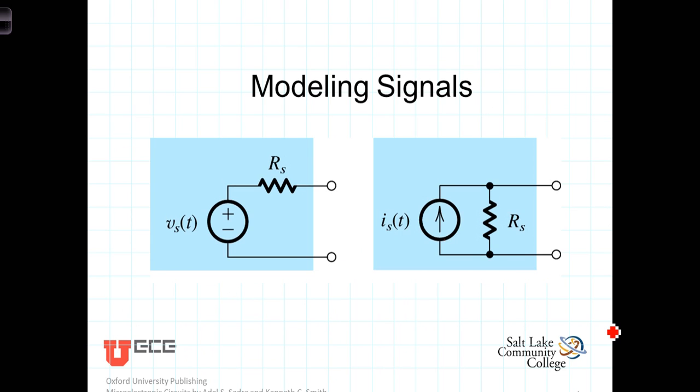These time variations of a signal are generally related to some physical property. Embedded in the signal's amplitude, phase, or frequency spectrum is information about the physical property that is of valuable interest. We can model these signals as either Thevenin equivalent or Norton equivalent sources.